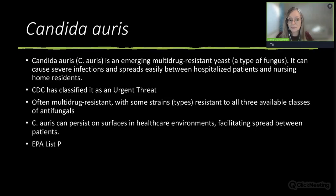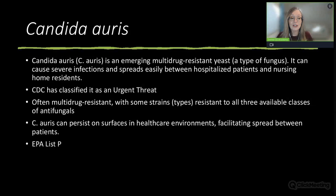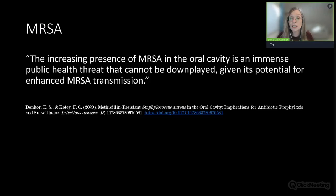Candida auris is an emerging multi-drug resistant yeast that can cause severe infections and spreads easily between patients in hospital settings and nursing homes. The CDC has classified it as an urgent threat, with some strains resistant to all three available classes of antifungals. Disinfectants for C. auris are found on EPA list P. MRSA—methicillin-resistant Staphylococcus aureus—has an increasing presence in the oral cavity, representing an immense public health threat with implications for antibiotic prophylaxis and surveillance.